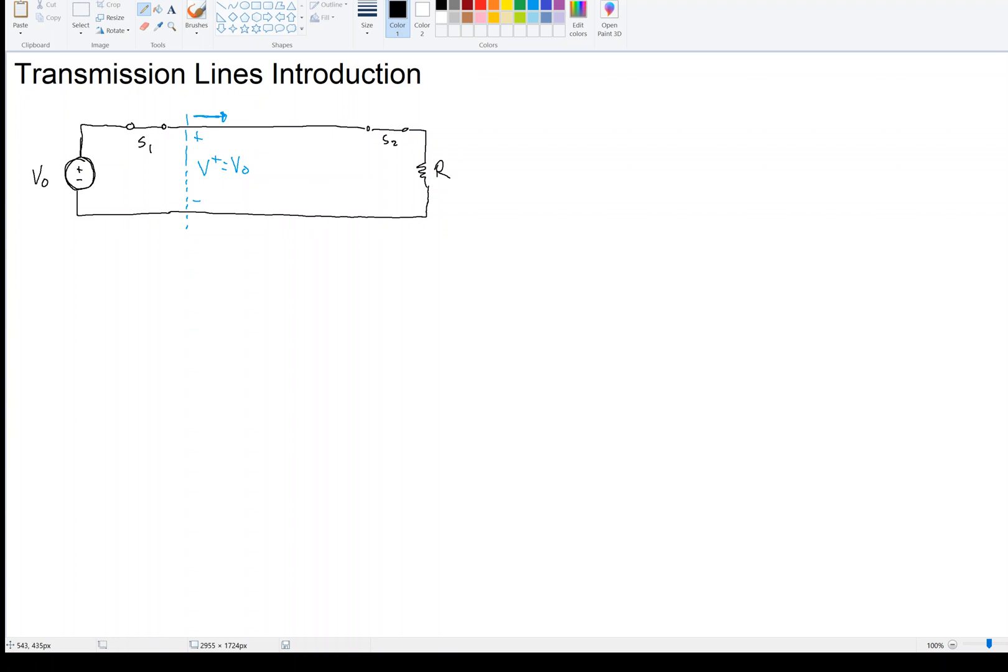Now, the voltage does not do this instantaneously. It does not instantaneously power the resistor. It takes time for the voltage source to travel. So, what I'm showing here in blue is the wave front. And this is representing the boundary between the part of the line that is charged to V zero to the left, and the part of the line that has yet to be charged, which would be to the right of the dashed blue line there.